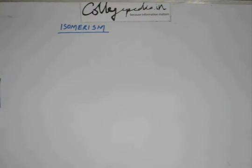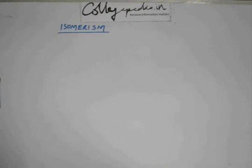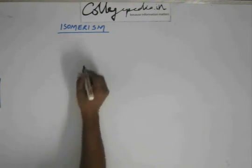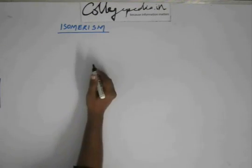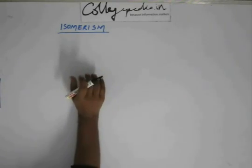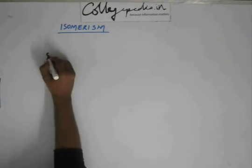Let's start studying isomerism. Isomerism is a property in which compounds having the same molecular formula exhibit different properties. That property can be a physical property or a chemical property, but the basic criteria for two compounds to exhibit isomerism is that they must have the same molecular formula.